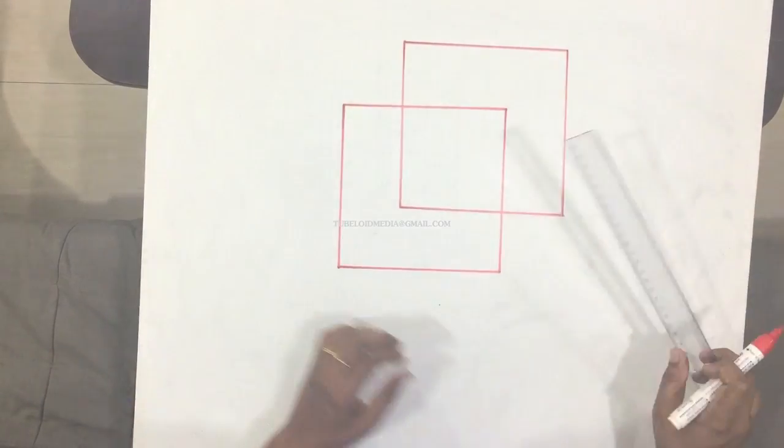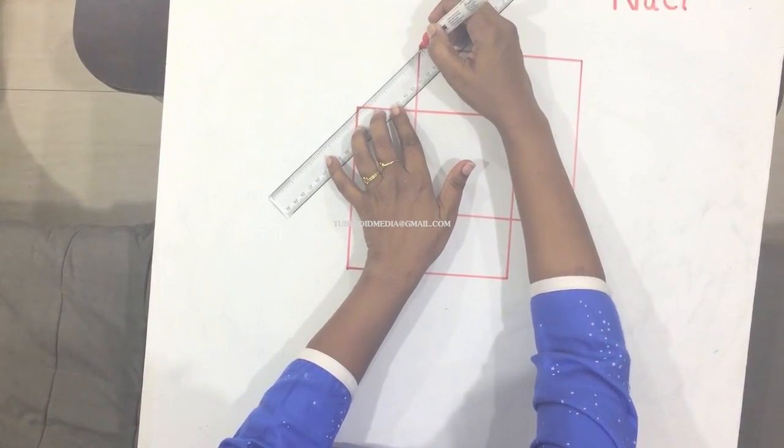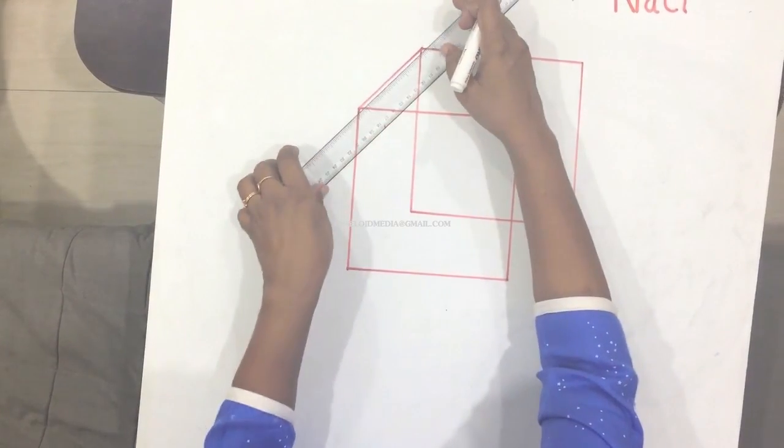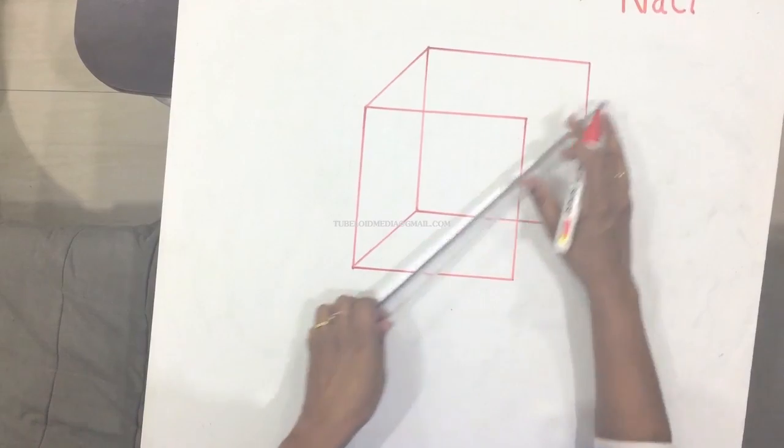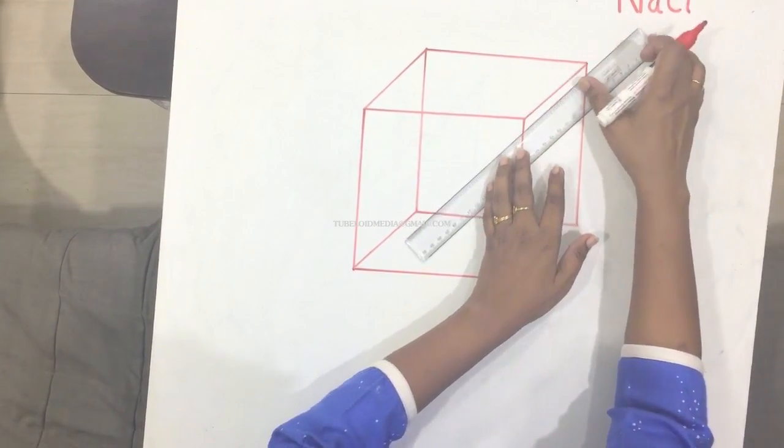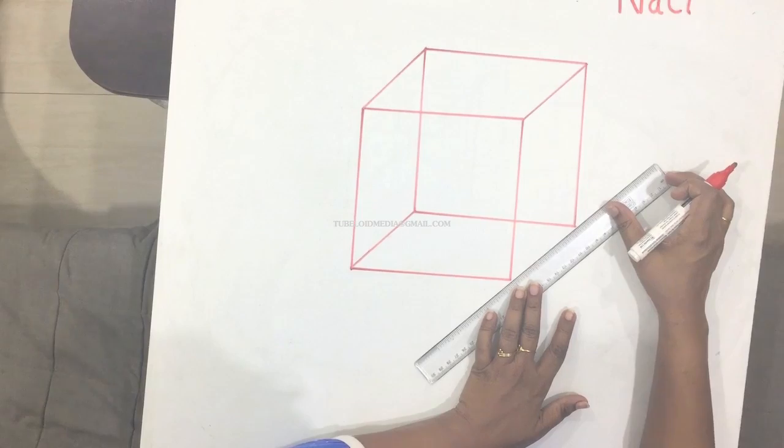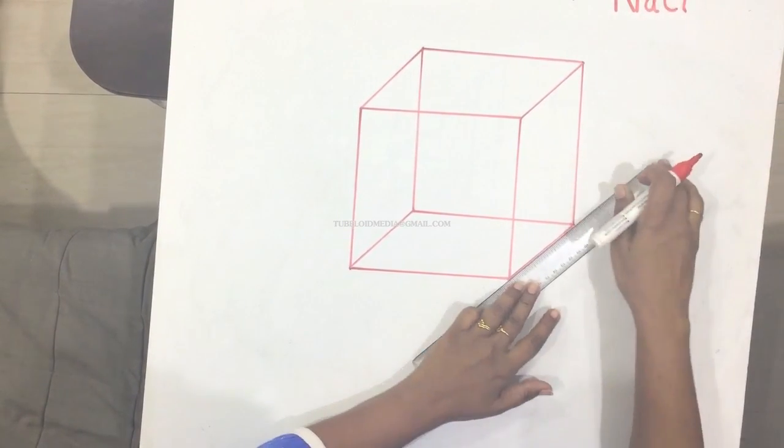I have drawn two squares now. Next is joining the ends here. I am joining all these. So I am joining the four corners. I have a cube now.